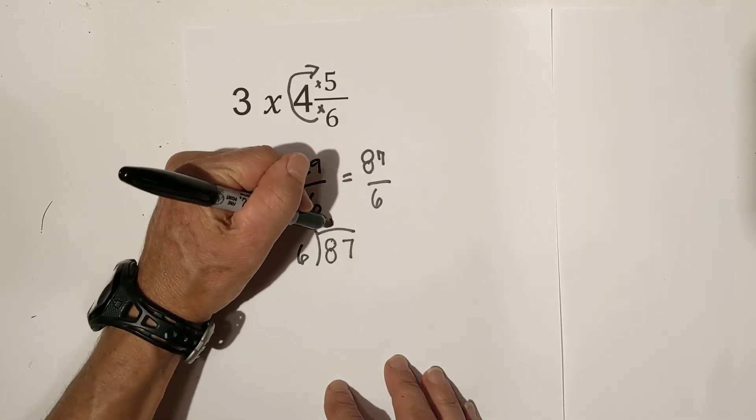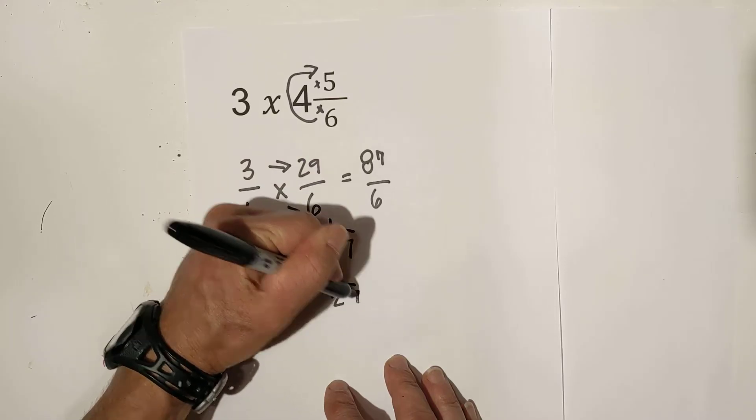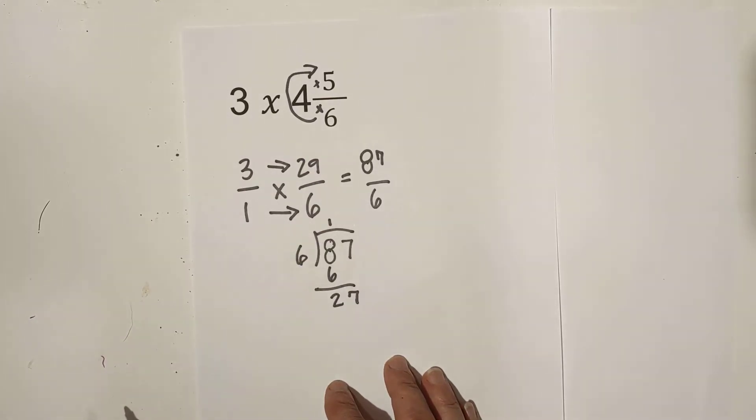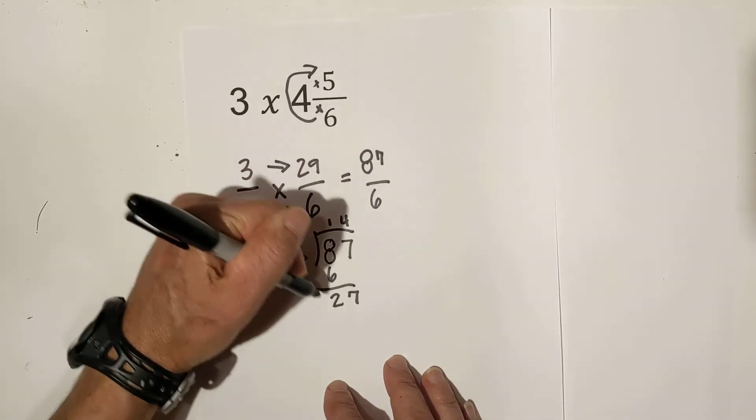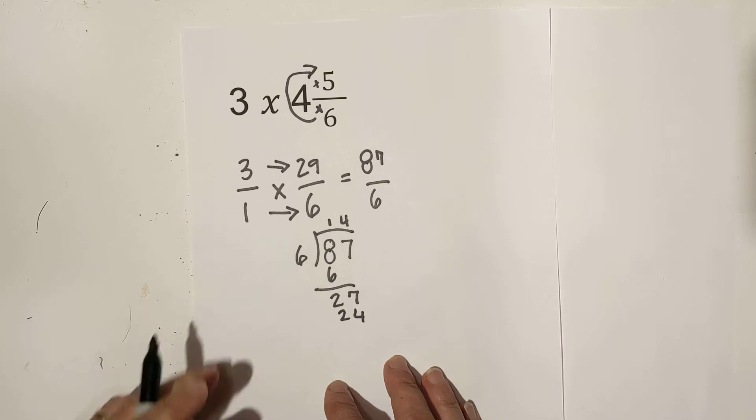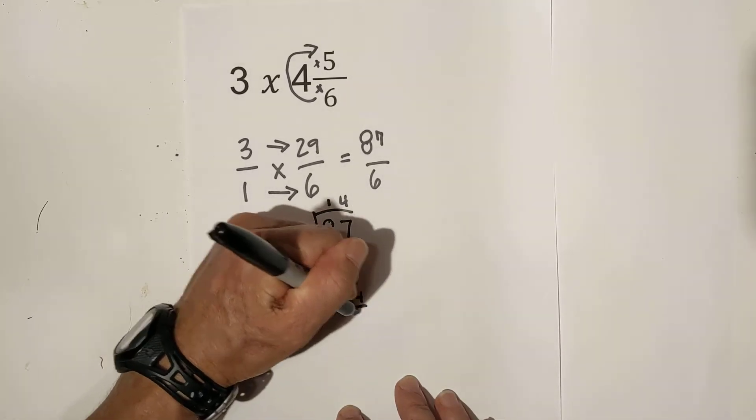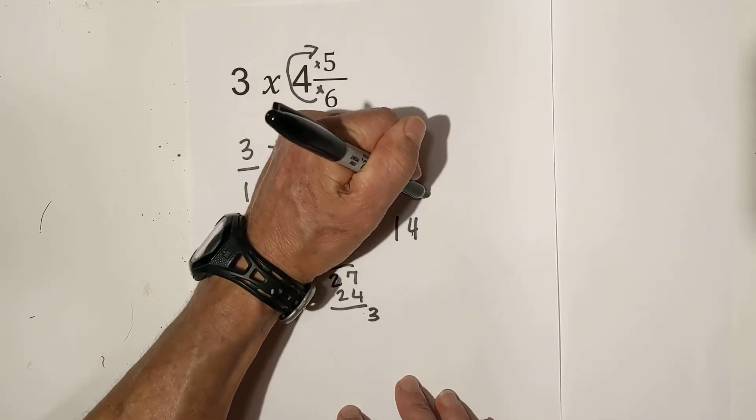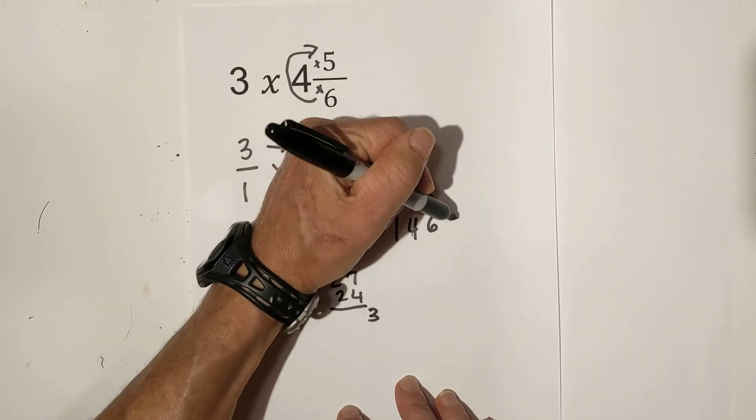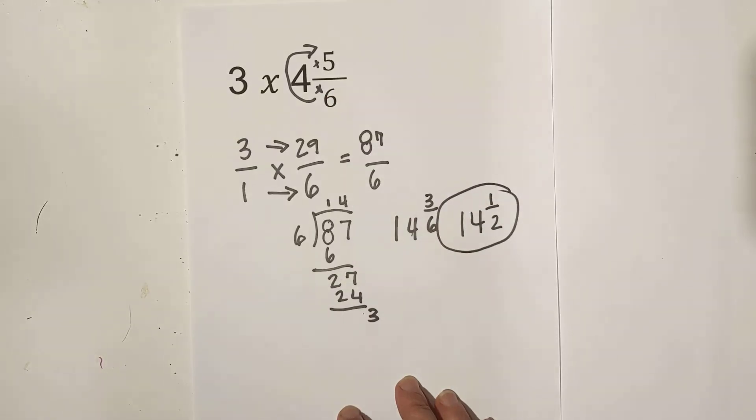6 goes into 8, 1 time. Bring down the 2. Then that is 27. 6 goes into 27, 4 times. 4 times 6 is 24. And then that gives us a remainder of 3. So now we have 14 and 3 sixths, which can be simplified to 14 and 1 half.